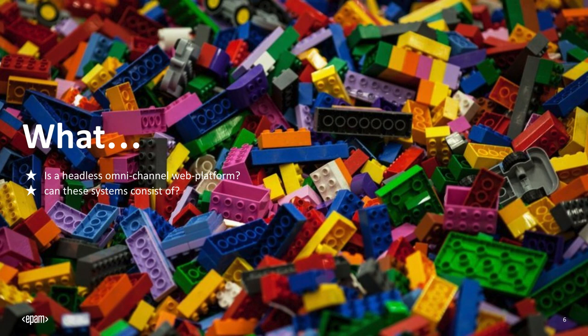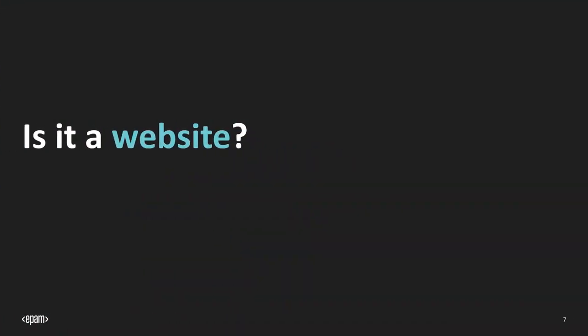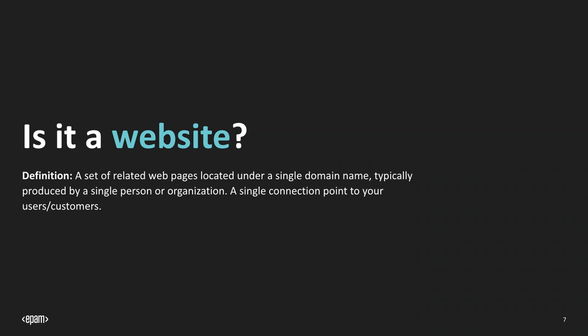So let's get into the what. What is headless? What is omnichannel? What is a headless omnichannel web platform? And what do these systems consist of? First and foremost: is it a website? This talk is going to have a ton of definitions in it. A website is a set of related web pages located under a single domain name, typically produced by a single person or organization — a single connection point to your users and customers. You'll notice the word 'single' is used quite a bit there.